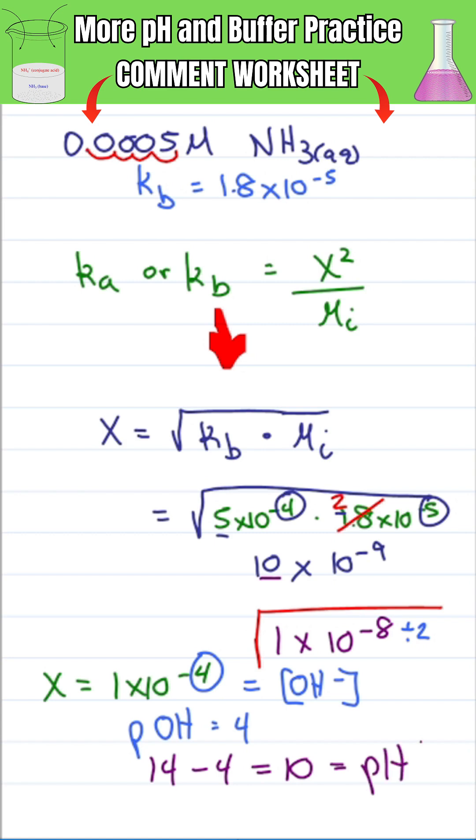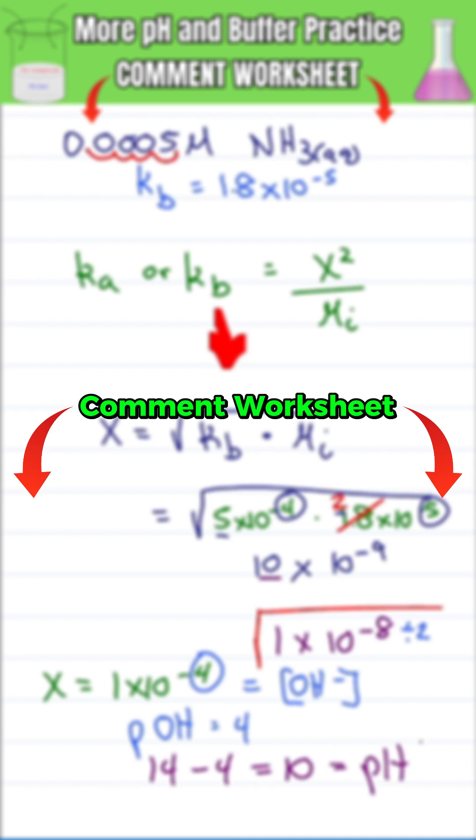Calculator says 9.48, which is close enough. For even more practice on pH and buffers without a calculator, just comment worksheet below.